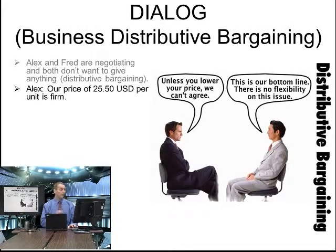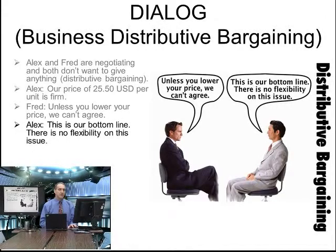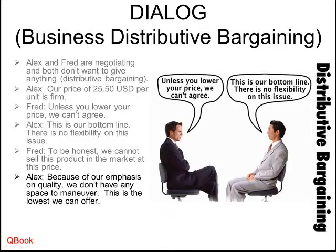Alex says: our price of $25.50 USD per unit is firm. Fred says: unless you lower your price, we can't agree. Alex responds: this is our bottom line — there is no flexibility in this issue. Fred says: to be honest, we cannot sell this product in the market at this price. Alex comes back with: because of our emphasis on quality, we don't have any space to maneuver. This is the lowest we can offer.